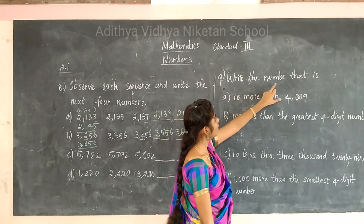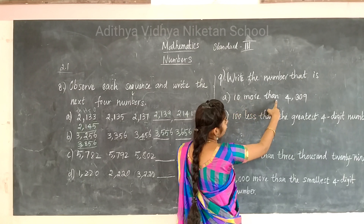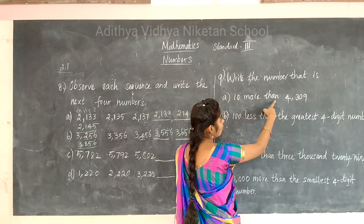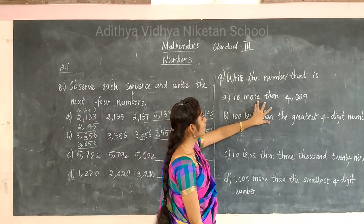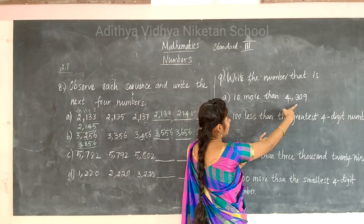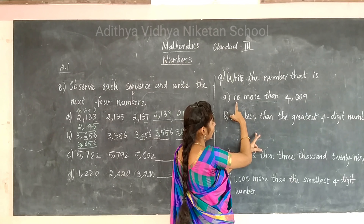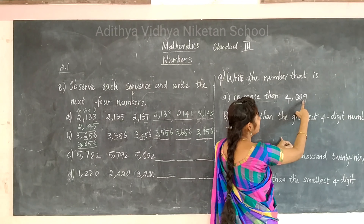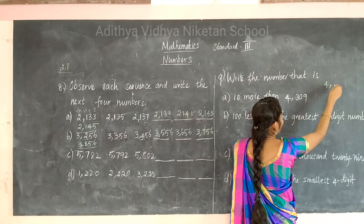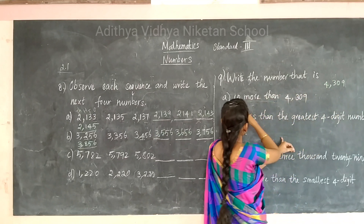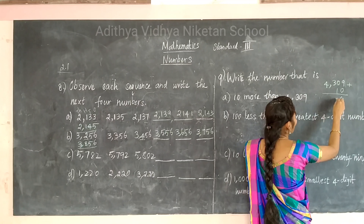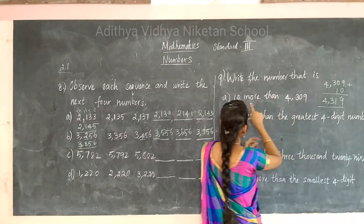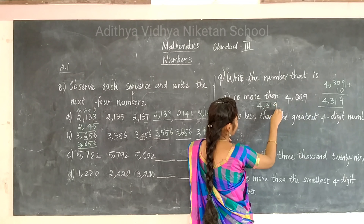Last problem — write the number that is 10 more than 4309. 'More than' means add. We add 10 to 4309. Just add 1 to the tens place. So 4309 plus 10 gives 4319.